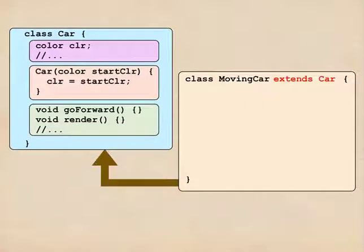We declared a new class called MovingCar, but to tell Processing that this was a subclass of Car, we followed the class definition by the words ExtendsCar.